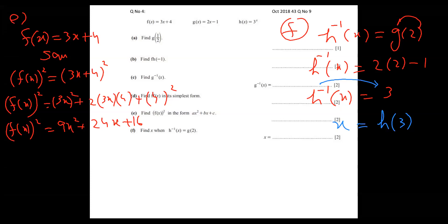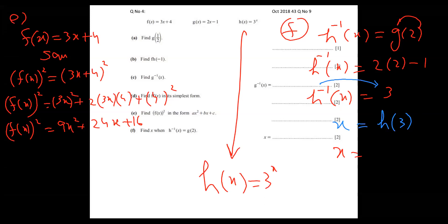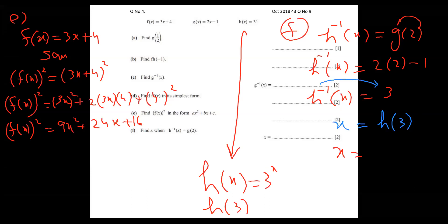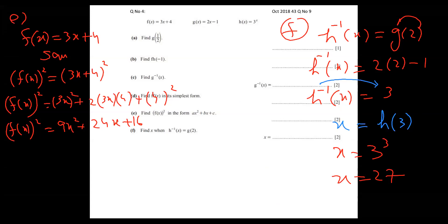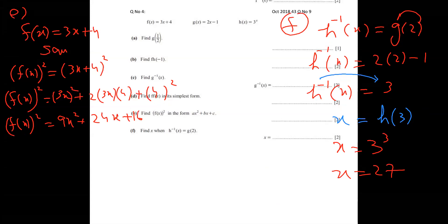To find h of 3, put three into h of x, which is 3 to the power x. So h of 3 equals 3 to the power 3, which equals 27. That is the final answer, and the whole question is completely finished.